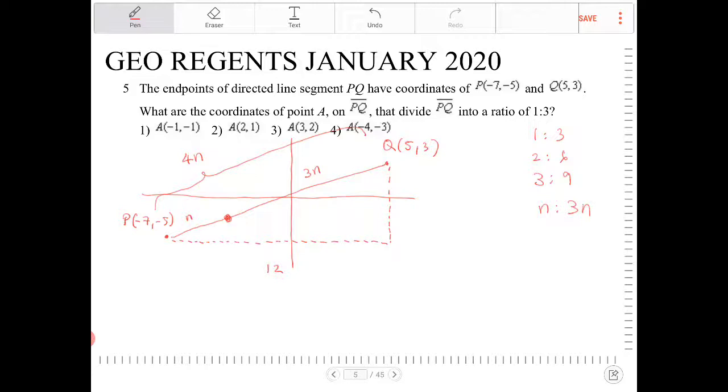I will need to do the same and find the vertical component. I can find the vertical component, the distance between P and Q in the vertical direction by 3 minus negative 5, which is 8.